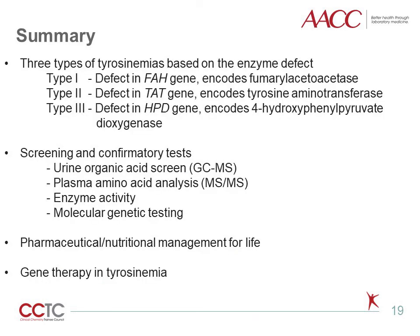To summarize, tyrosinemias are autosomal recessive disorders that occur as a result of enzyme defects in the metabolism of tyrosine. Type 1 is the most common and results in accumulation of succinylacetone and subsequent hepatorenal consequences. Gas chromatography and tandem mass spectrometry have been instrumental in the screening and confirmation of tyrosine metabolites for the diagnosis of tyrosinemia. Currently, low tyrosine and phenylalanine diets in combination with niticinone have been successfully used to manage these individuals. Gene therapy strategies such as the CRISPR-Cas9 genome editing approach hold future promise in treatment and management of tyrosinemias.